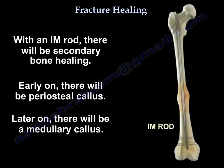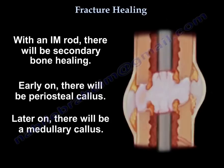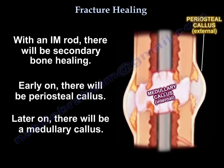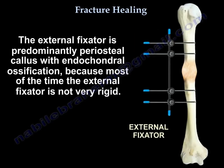Early on with an IM rod you will have periosteal callus, and later on you will get medullary callus. The external fixator is predominantly periosteal callus with endochondral ossification because most of the time the external fixator is not very rigid.